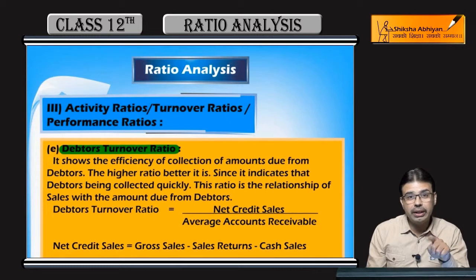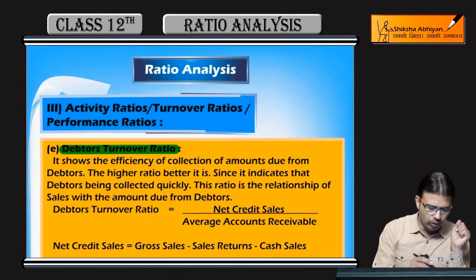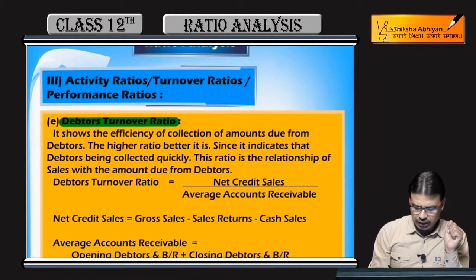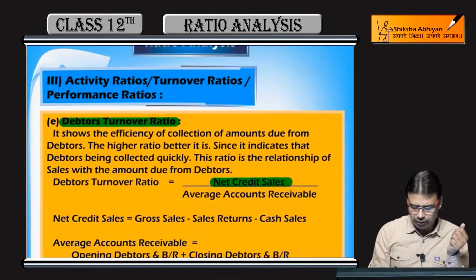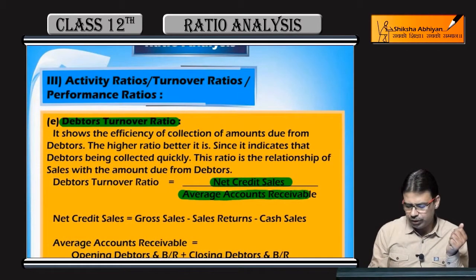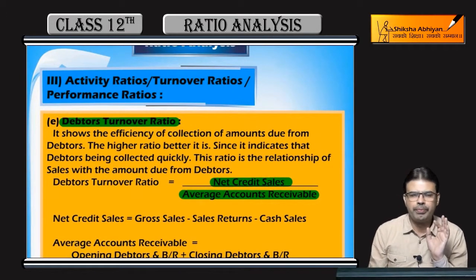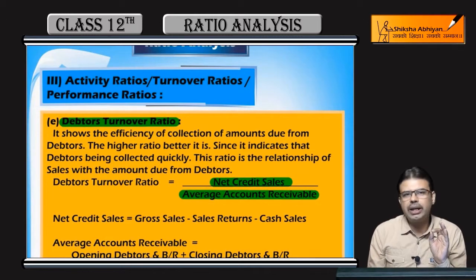So the debtors turnover ratio — how many turnovers do debtors make? The formula is: net credit sales divided by average accounts receivable. Net credit sales divided by average accounts receivable.